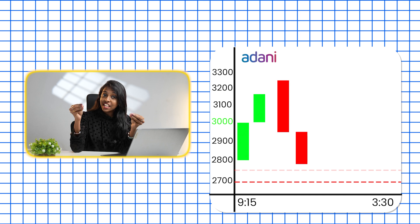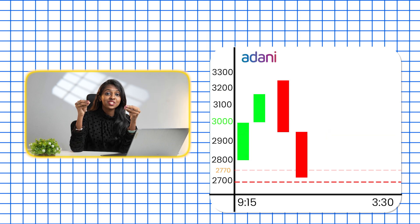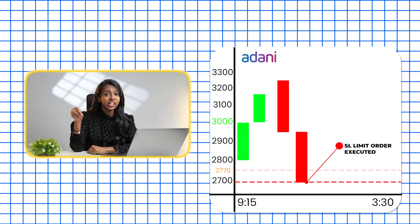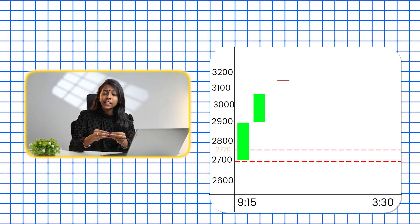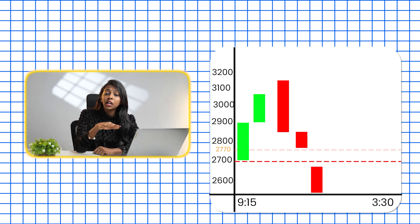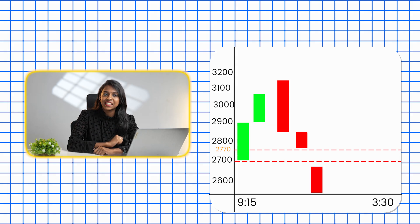So here is how it works: if the stock price reaches 2770, your limit order to sell at 2700 will get triggered. The execution of the trade will happen around 2700 or even at a better price, not at a worse price. However, there is also a risk in the stop-loss limit order — if the market moves too quickly and creates a gap, your limit order might not execute at the desired price that you have set.